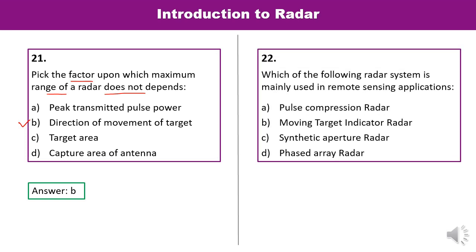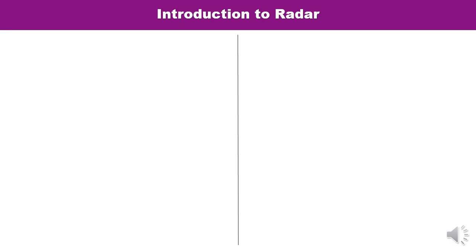Question 22: Which radar system is mainly used in remote sensing applications? In remote sensing, synthetic aperture radar (SAR) is used. You have to remember this. That is the correct answer.